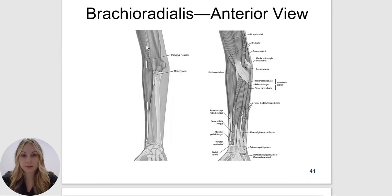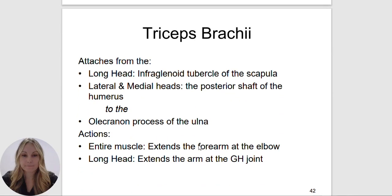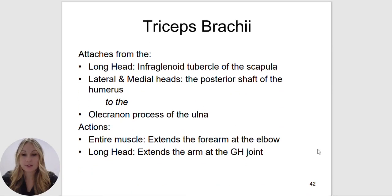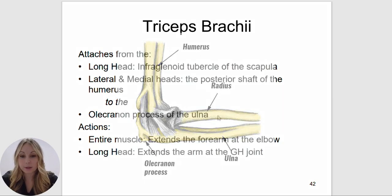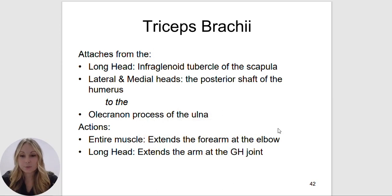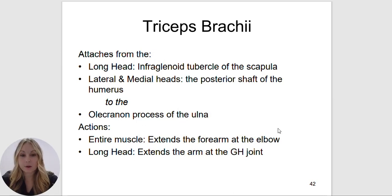Here is the brachioradialis, the styloid process of the radius, and the distal portion of the humerus. The triceps brachii will have three different attachments. The long head attaches to the infraglenoid tubercle of the scapula. The lateral head and medial head attach to the posterior shaft of the humerus to the olecranon process of the ulna — the olecranon process is the tip of your elbow. The actions: the entire muscle will extend the forearm at the elbow, and the long head will extend the arm at the glenohumeral joint.